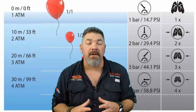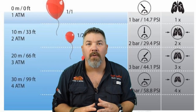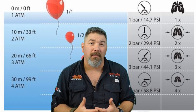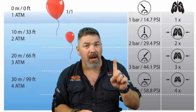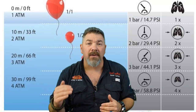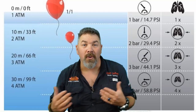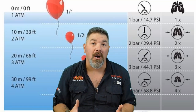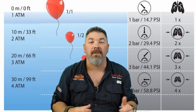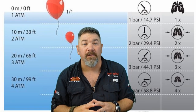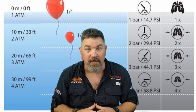Every 10 meters or 33 feet of salt water — or 34 feet of fresh water — we increase our atmospheric pressure by one. At the surface we're at one ATA. At 33 feet or 10 meters, we're at two ATA, or two bar in metric. That means we have two times the amount of pressure pushing in on us at 33 feet compared to the surface, which can affect both natural and artificial air spaces.